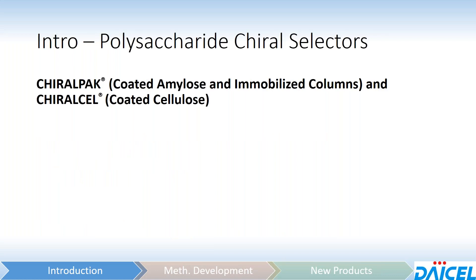Just so we're all on the same page, these are the polysaccharide chiral selectors we're going to be focusing on. We've got our ChiroPak line of columns, which encompasses both coated amylose as well as all of the immobilized columns. The coated amylose columns all start with an A — things like AD and AS — and the immobilized columns all start with I: IA, IBN, and so forth.